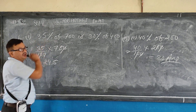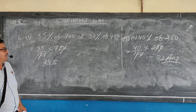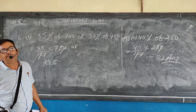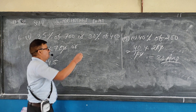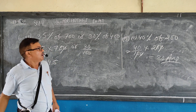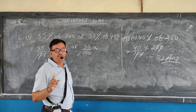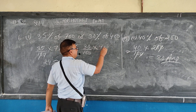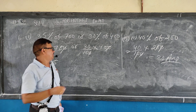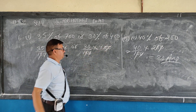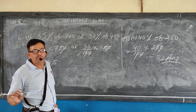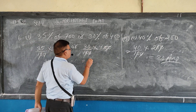The value of 35 percent of 700 is 245. Now find the value of 30 percent of 400. 30 by 100 into 400 — cancel the 10s. 30 into 4 gives 120.